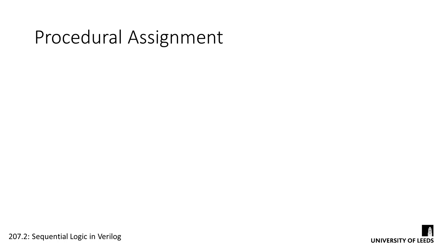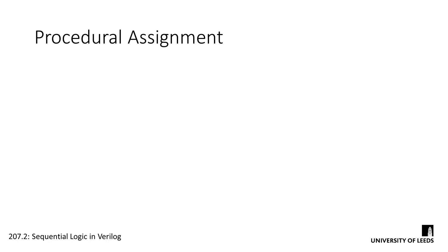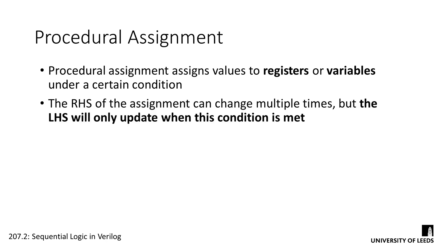One of the first things we need to tackle when dealing with sequential logic is procedural assignment. Procedural assignment is the backbone of sequential logic in Verilog. It allows us to assign values to registers or variables under specific conditions. The right-hand side of the assignment can change multiple times, but the left-hand side will only update when these conditions are met.